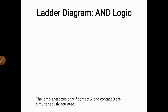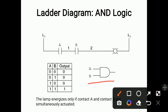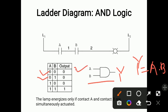Now we will see the ladder diagram for AND logic. The AND gate symbol has two inputs A and B and one output Y. The equation for AND gate is Y = A · B — the output is the product of both inputs. If both inputs are 0, output is 0. If A is 0 and B is 1, output is 0. If A is 1 and B is 0, output is 0. If both inputs are 1, output is 1. This is the truth table for AND gate.